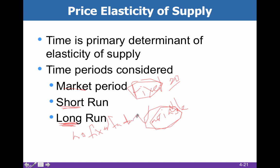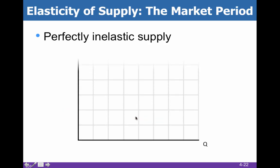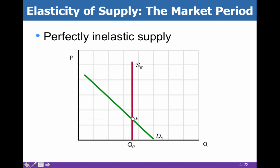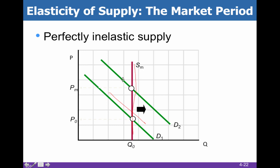Everything is variable in the long run. In the market period, we have perfectly inelastic supply, which looks like a vertical supply line. If demand changes from D1 to D2, suppliers can't change anything — everything is fixed and nothing is variable in the market period.